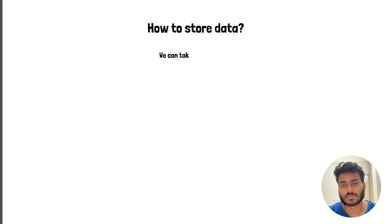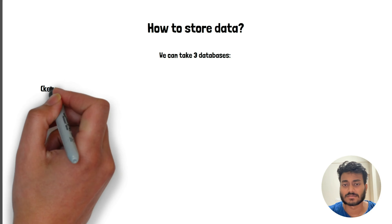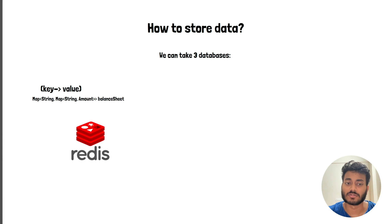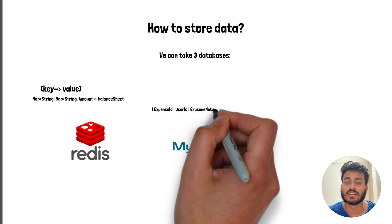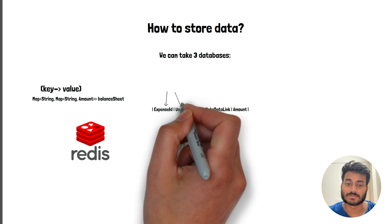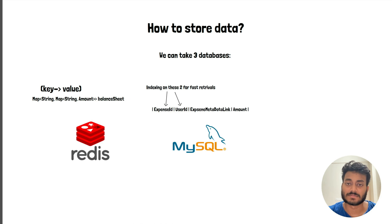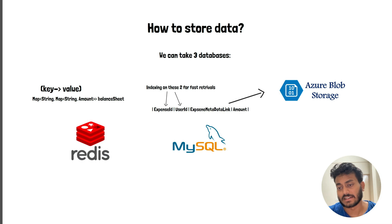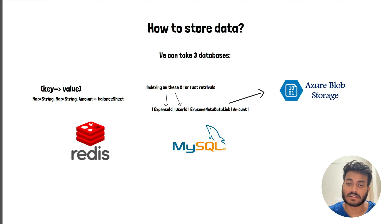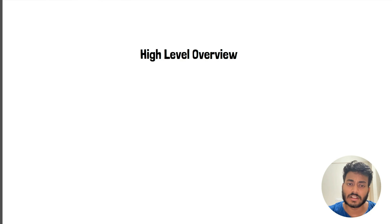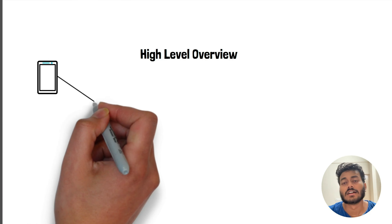For data storage we can use three databases. A key-value store like Redis for storing the balance sheet. A MySQL database for storing expense data, with indexes on expense ID and user ID for fast retrieval. And since expense metadata may contain images and other blob data, it's better to store those in blob storage and keep a link to them in the SQL table.